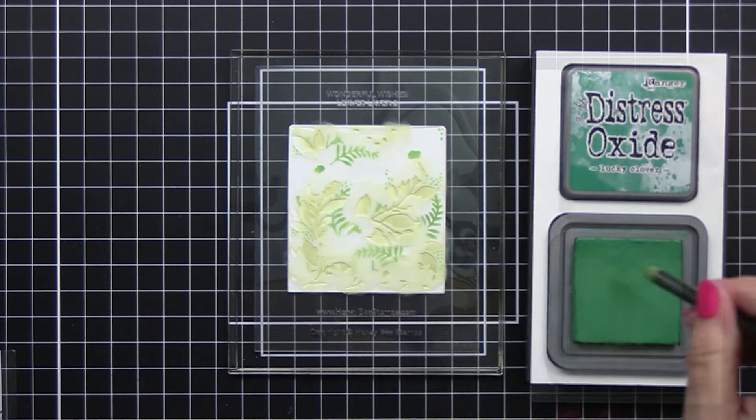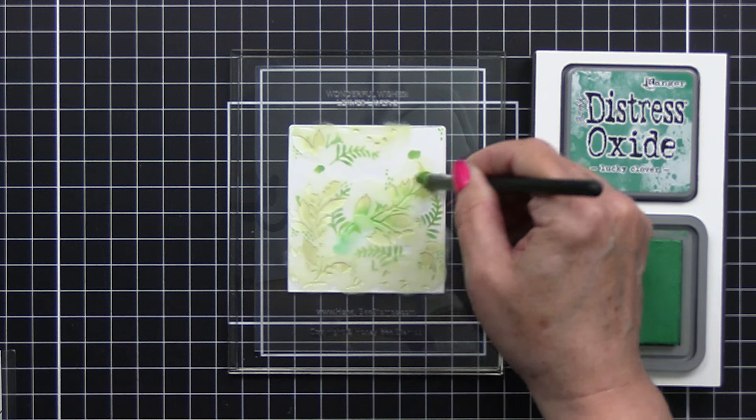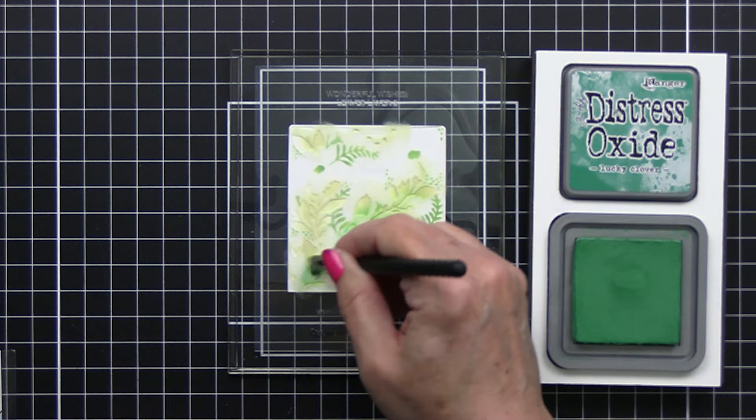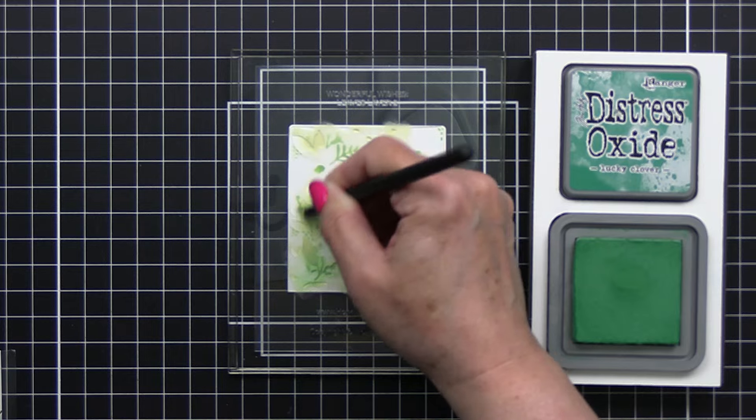And of course I've really sped this up because it's just the same thing over and over again, just using different colors. Now this is Lucky Clover. I do apologize, I think this frame is a little bit blurry.